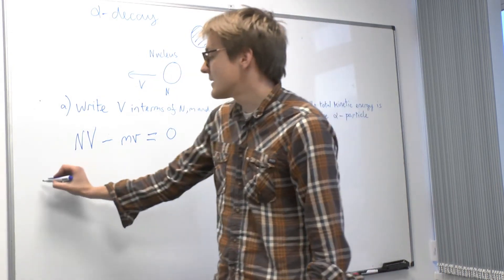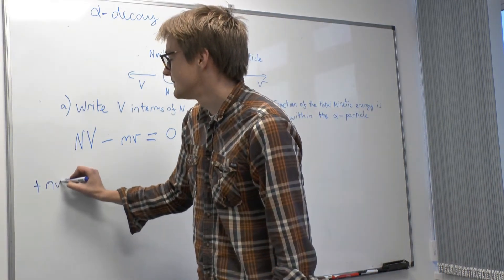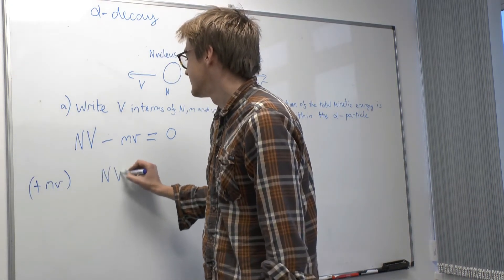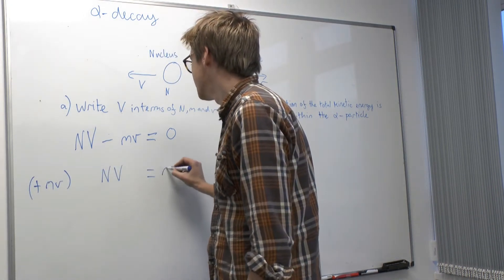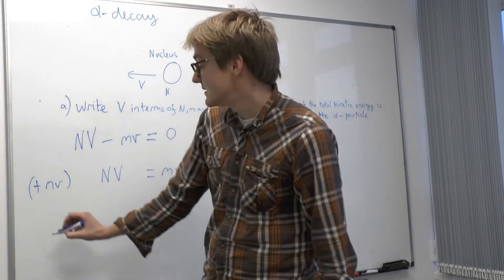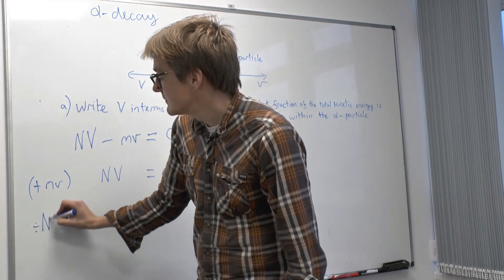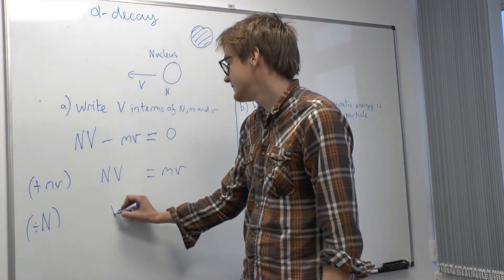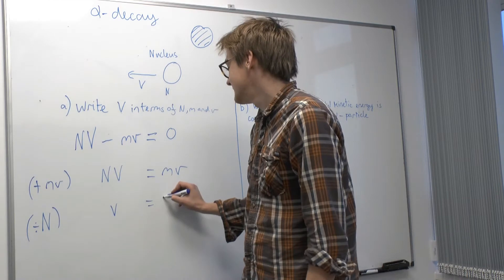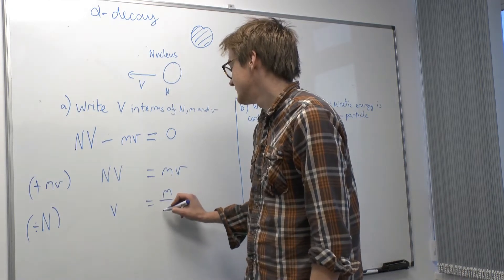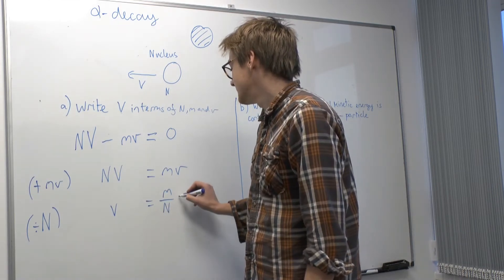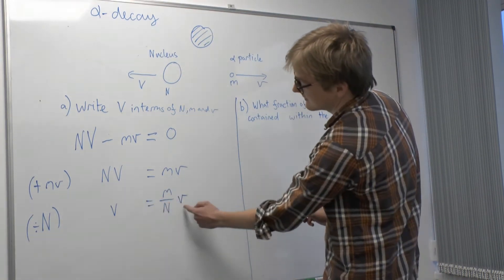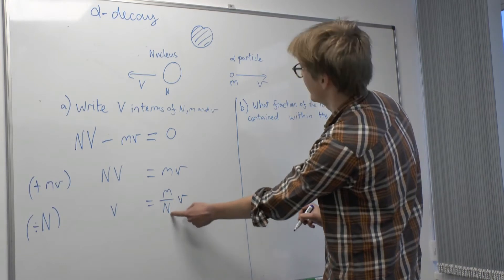Now if we add NV to both sides and divide by N, then we've answered the question. So big V is written entirely in terms of little v, m and N.